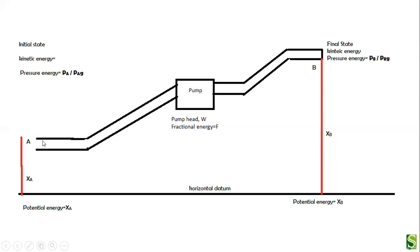When one kilogram of liquid is entering at point A, it is going to possess some kind of energy. That liquid will have three types of energy: the first is kinetic energy, then potential energy, and pressure energy.